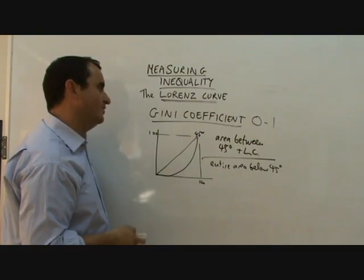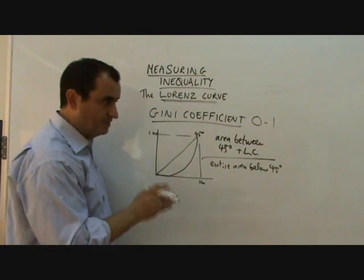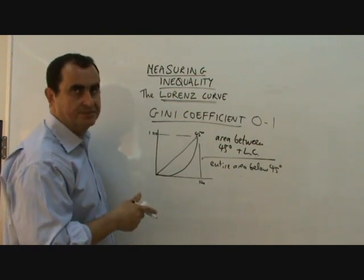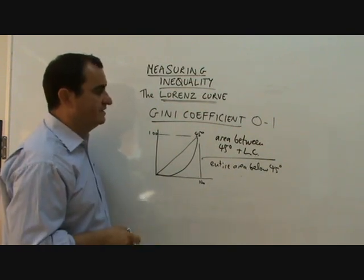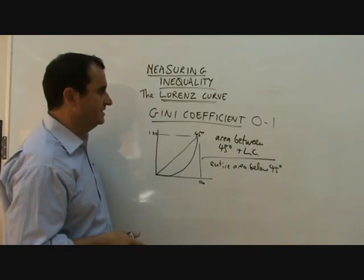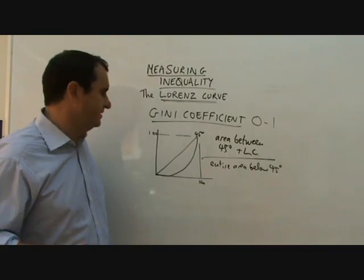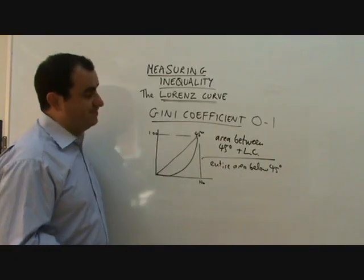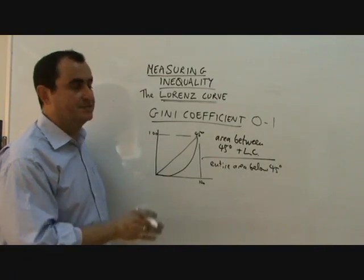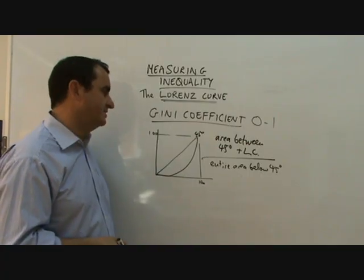So, the Gini coefficient is quite nice because it gives us an actual number, and we can literally then compare the size of numbers and judge the relative equality of different time periods or different countries. I think the UK's Gini coefficient is something like 0.33, something like that, and if the politicians wanted to reduce that, they might set themselves a target. It's easier to set targets with Gini coefficients than it is with Lorenz curves.